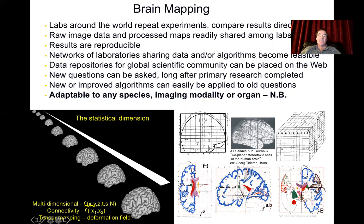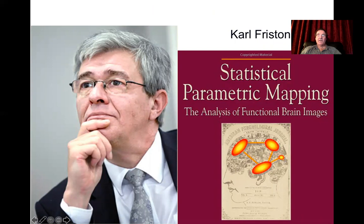Most importantly, this principle of stereotactic space is adaptable to any species, imaging modality, or organ. So we now have all of the data mapped into a common 3D coordinate space, allowing us all kinds of statistical approaches. Carl Friston, one of the giants in the field, introduced statistical parametric mapping, or SPM, which allowed us to quantify the statistical significance of any brain regional activation.